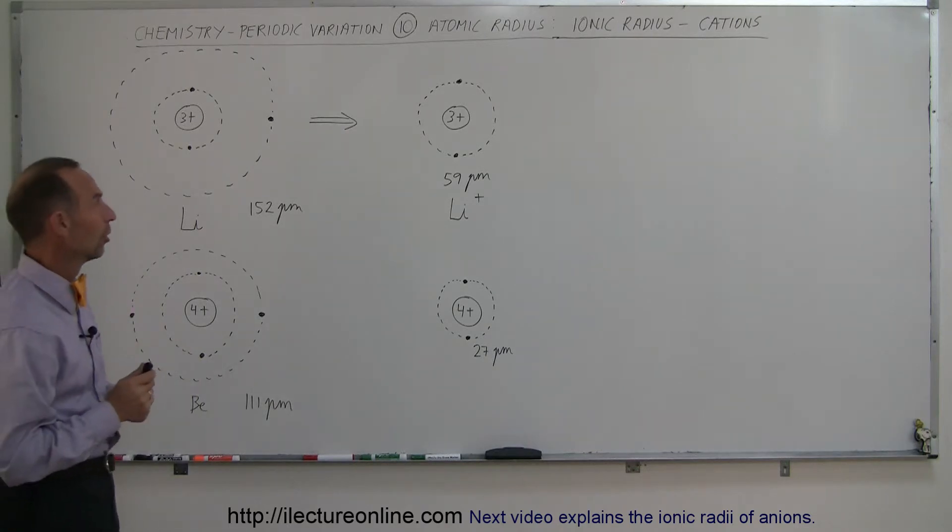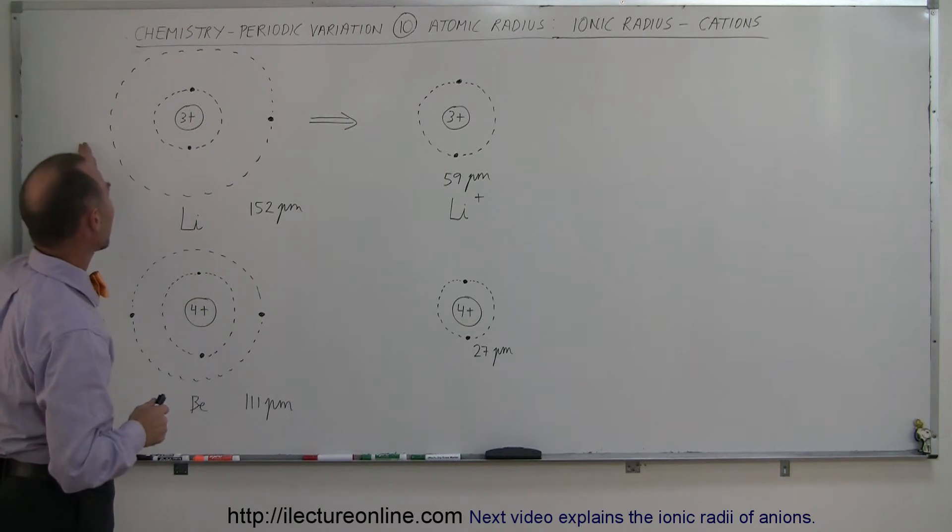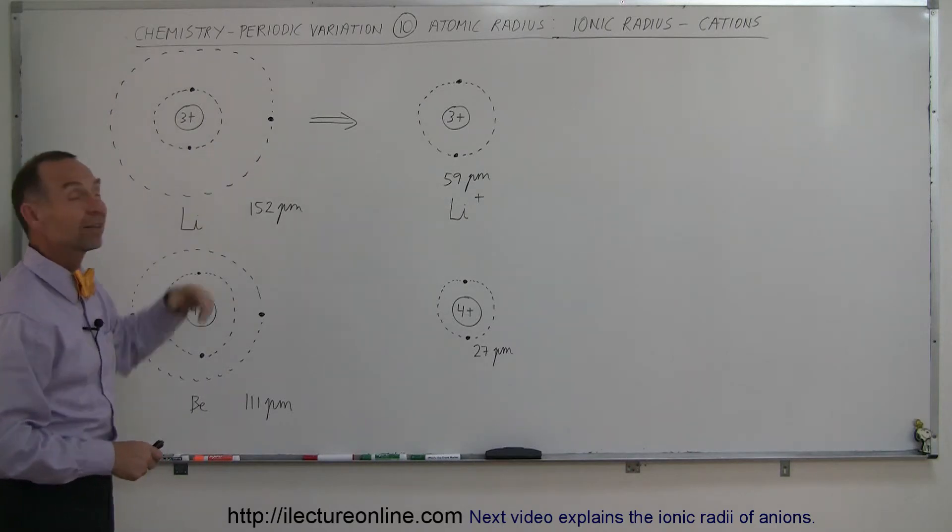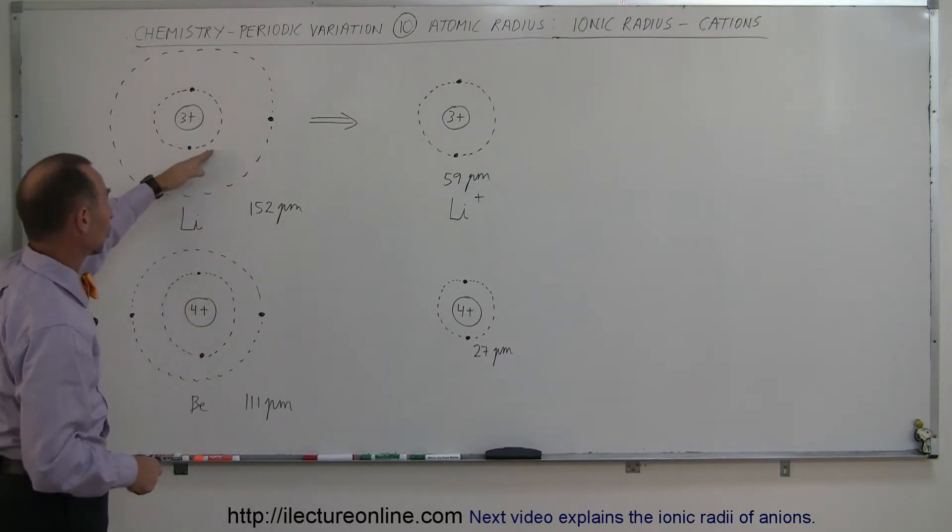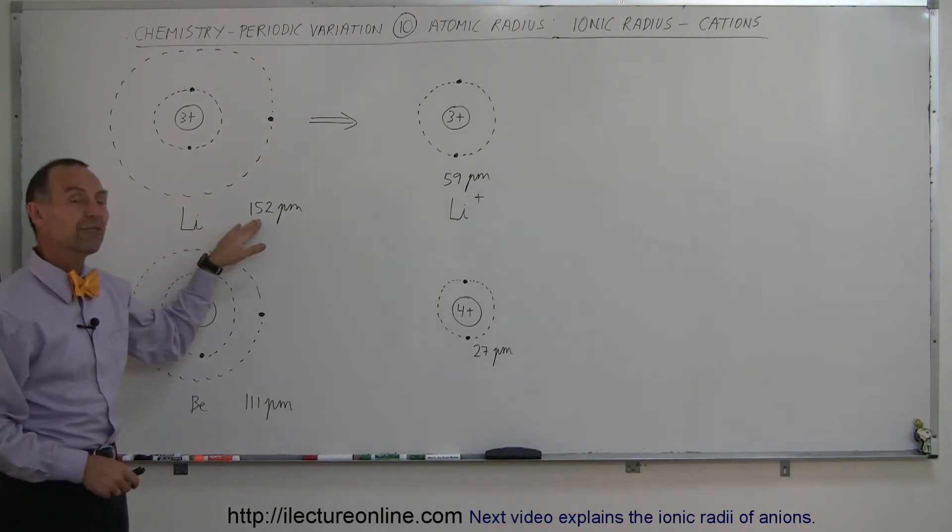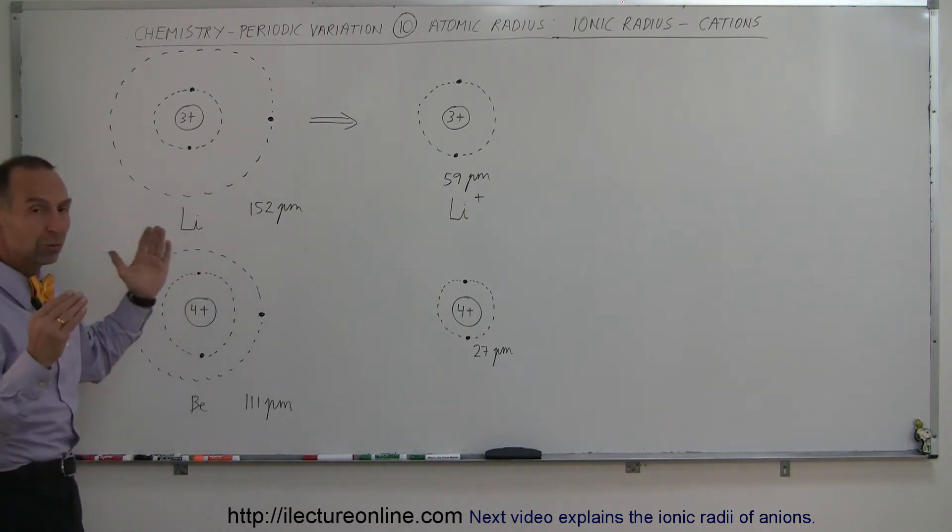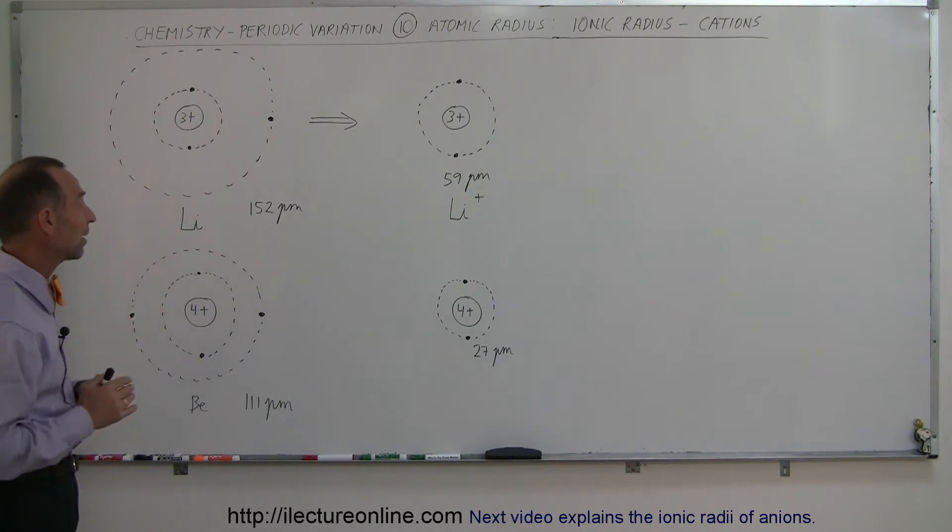So let's take a look at the cations first. Let's say we start off with a lithium atom, which has three protons in the nucleus, two electrons in the innermost energy level, and a third electron in the second level. So this would be the first s orbital, the second s orbital. Notice the radius is 152 picometers, which means it's a fairly large atom.